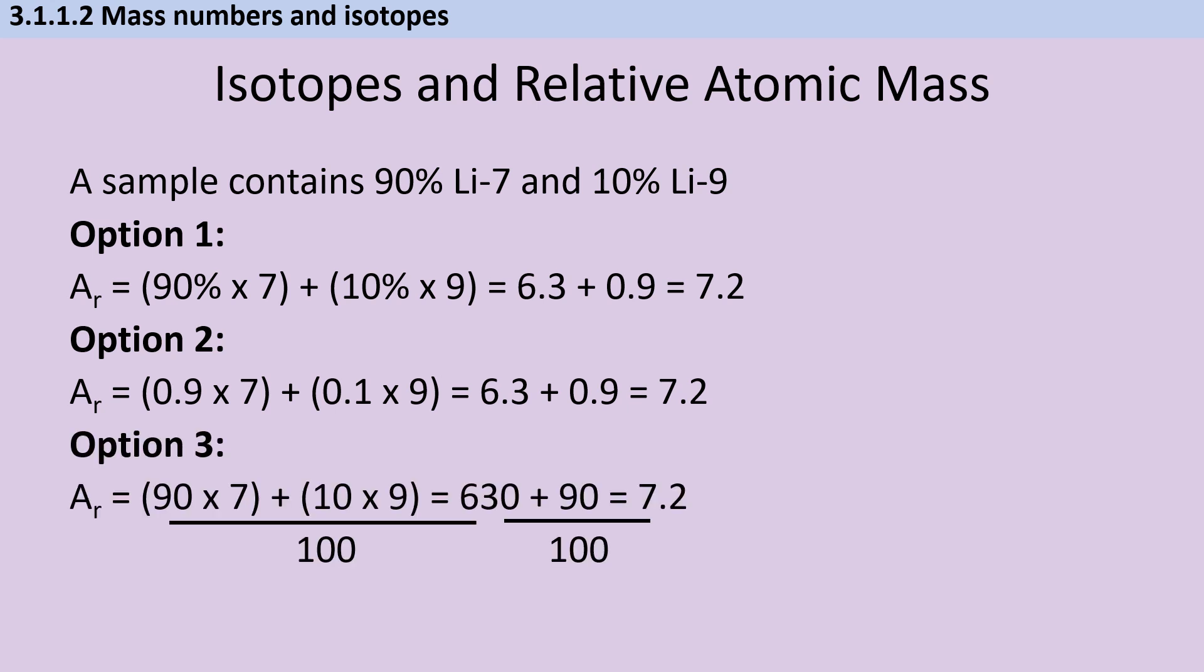However, there is a third approach in which we use the abundance of each isotope divided by the total abundance. Now, this might look quite long-winded because at the moment, it's just working out to be exactly the same as the one above it. 90 divided by 100 gives us 0.9. 10 divided by 100 gives us 0.1. So why would we bother? Well, the big advantage of this final method is that it's the only one that works if you're given absolute abundance data rather than relative abundance data.